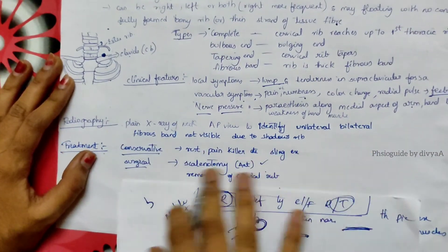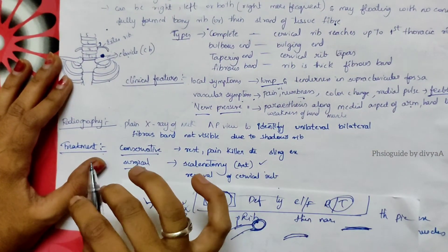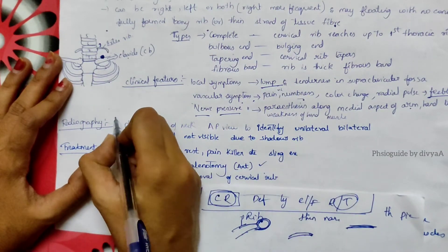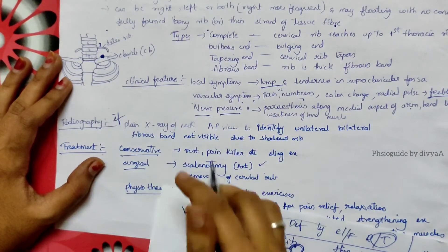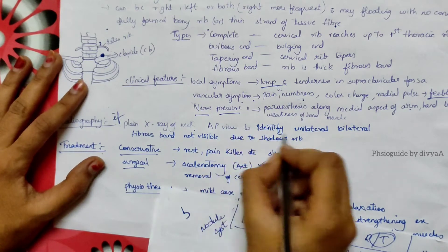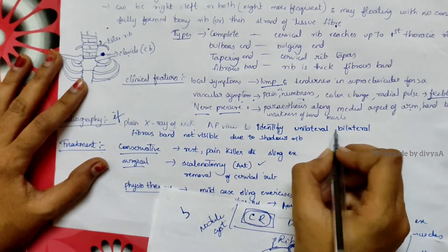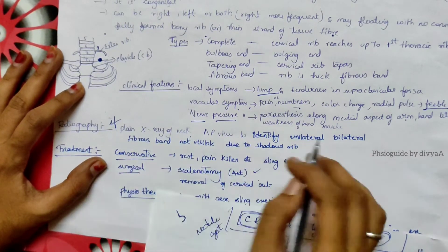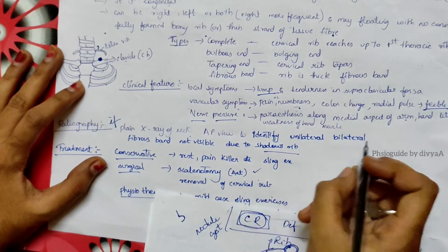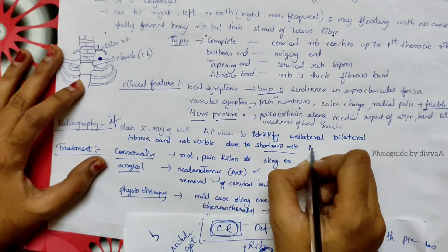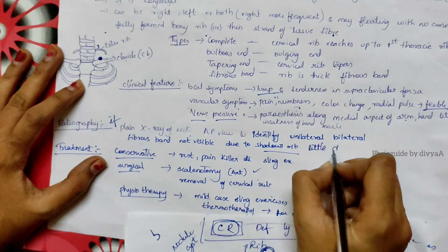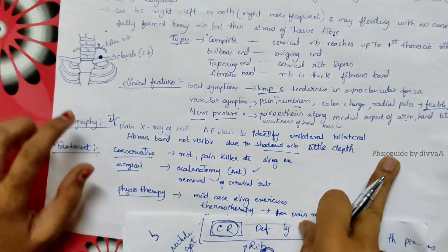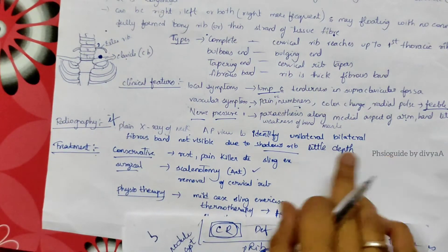Radiography: we can see this cervical rib in the plain x-ray of the neck, anterior-posterior view, to identify unilateral and bilateral both sides. Fibrous band which is not visible due to shallow depth, and fibrous band will not be seen in the x-ray because it is not a bone.